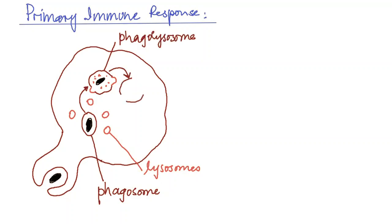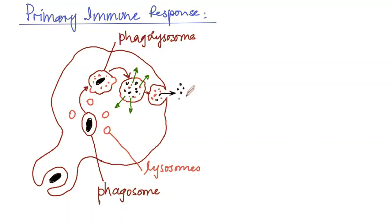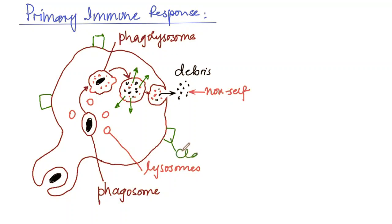The phagolysosome contains parts of the pathogen, some enzymes, and non-self antigens present on the surface of the pathogen. Eventually the phagolysosome touches the cell surface membrane. Any substances useful to the cell diffuse out into the cytoplasm, while the phagolysosome ejects its remaining contents outside the cell as debris. This debris contains important substances called non-self antigens, which stick to special proteins on the outer surface of the phagocyte.